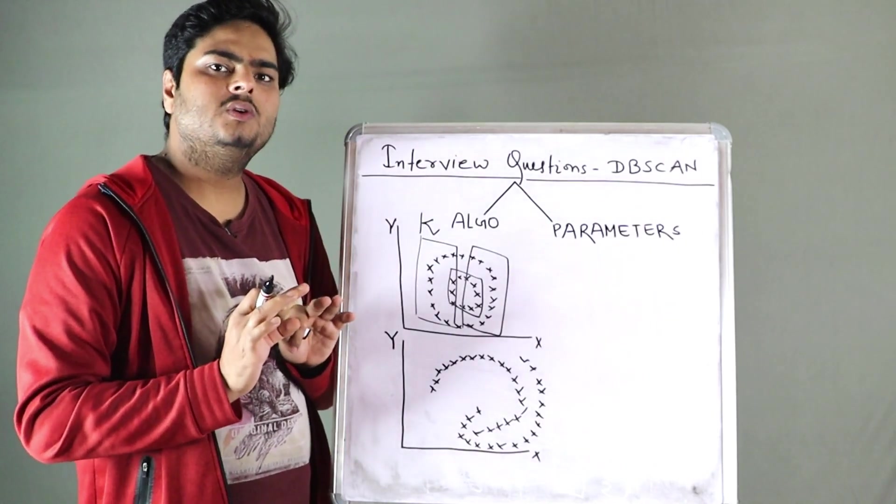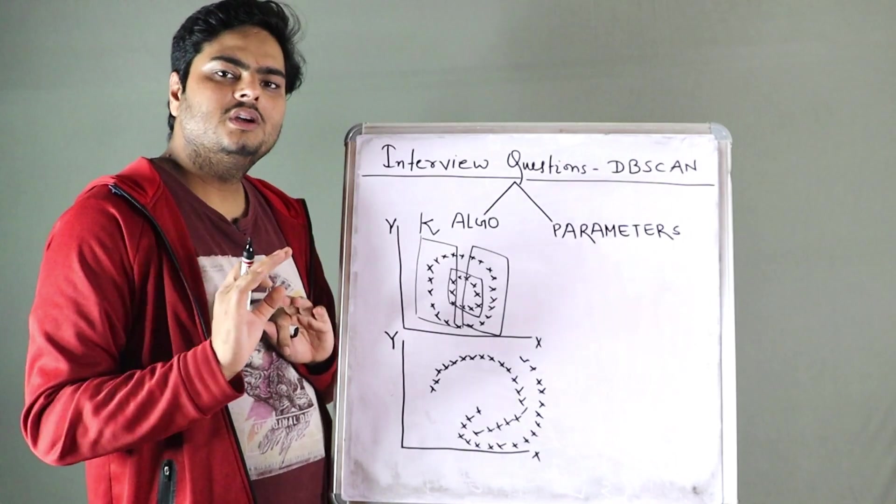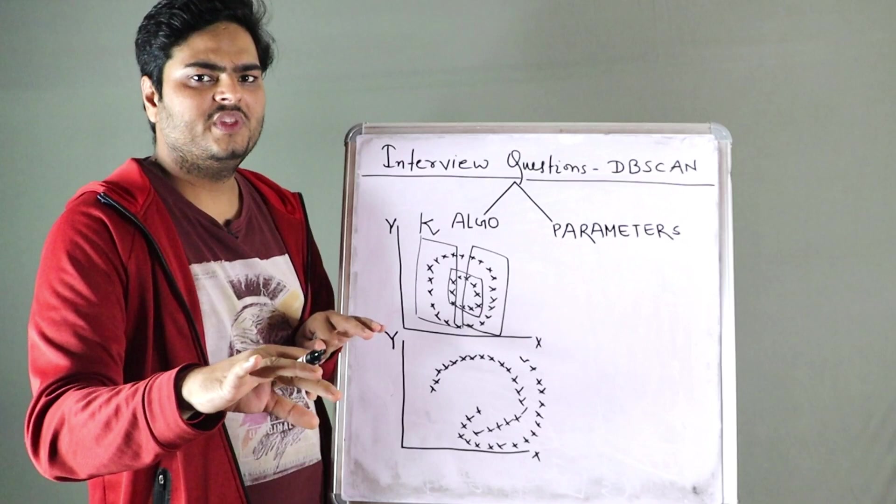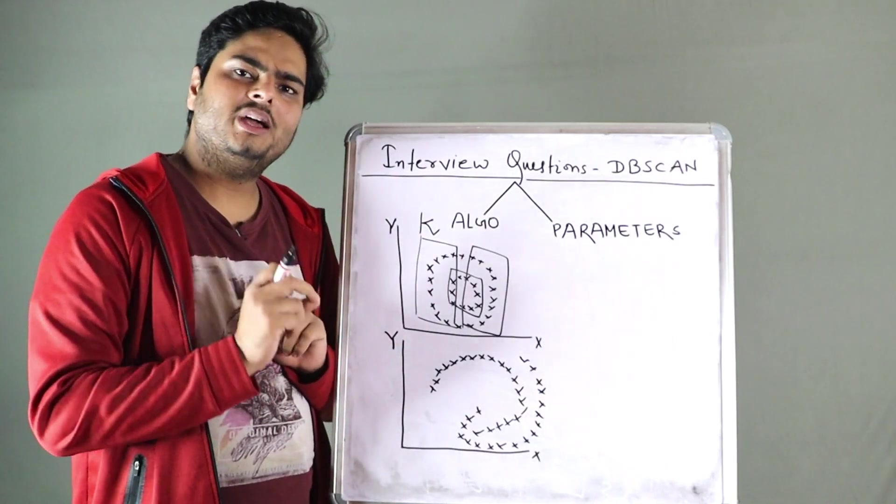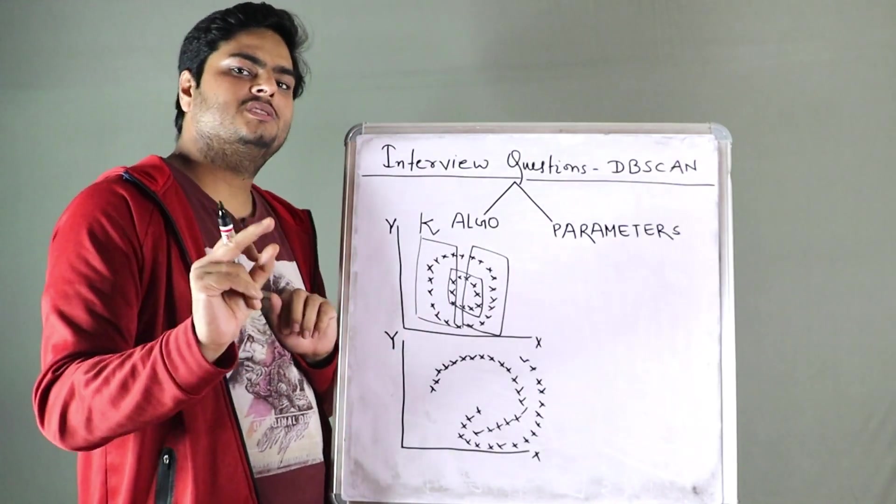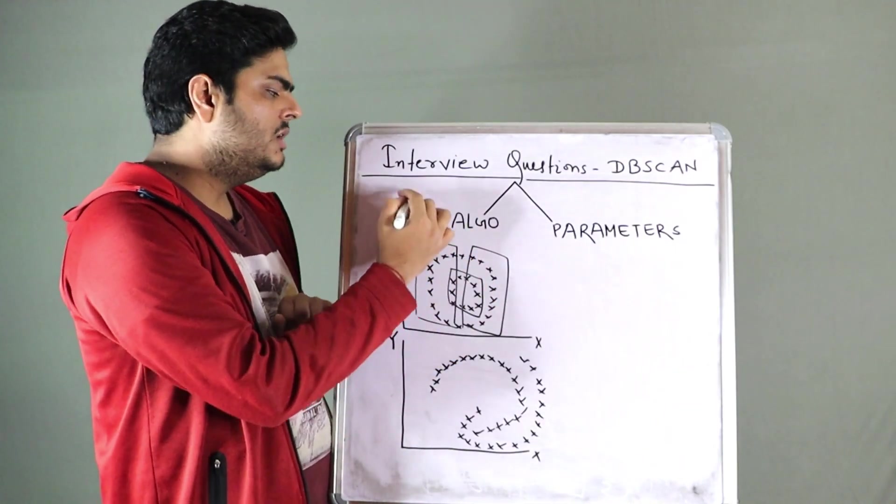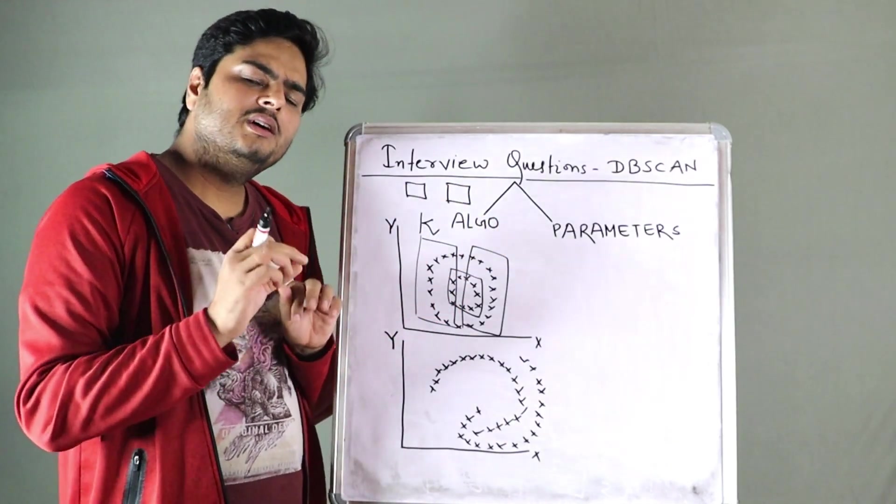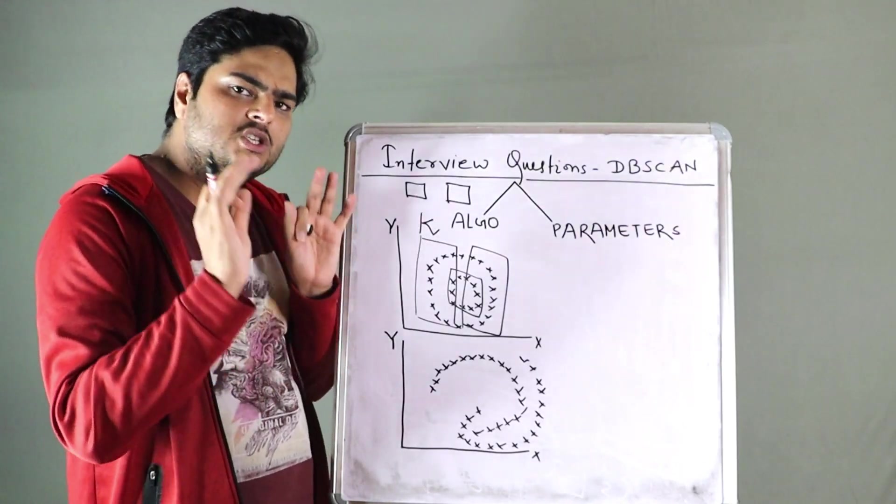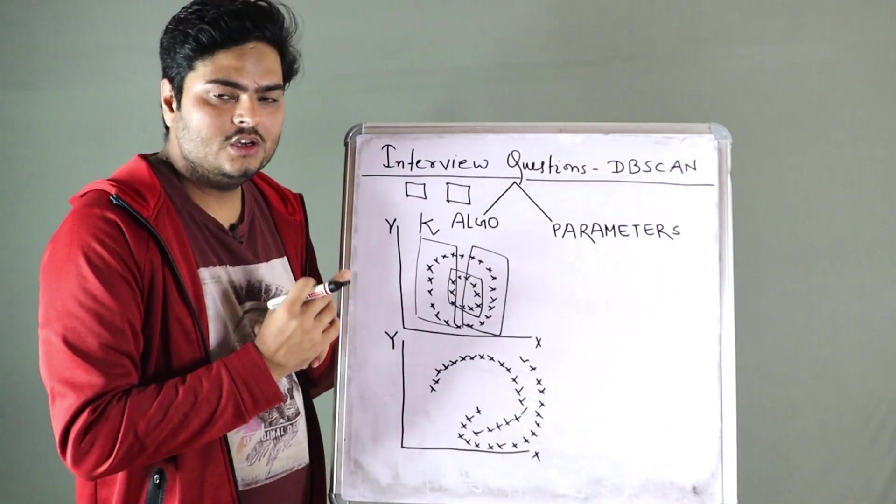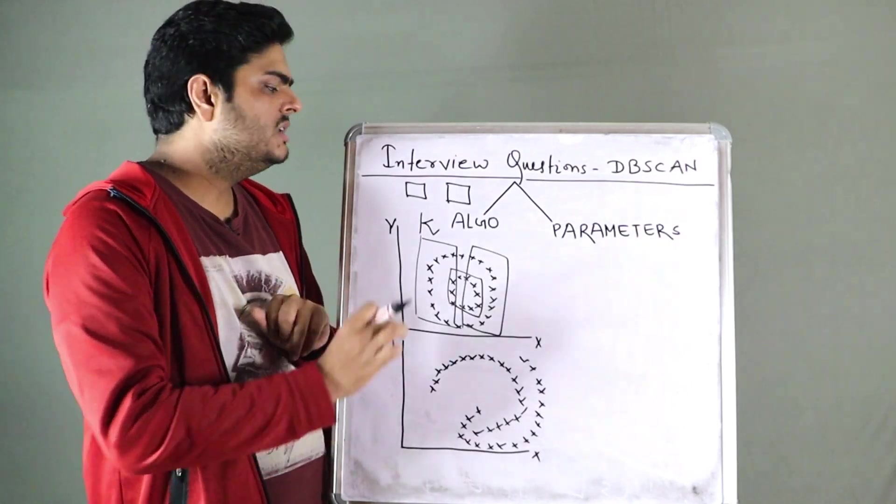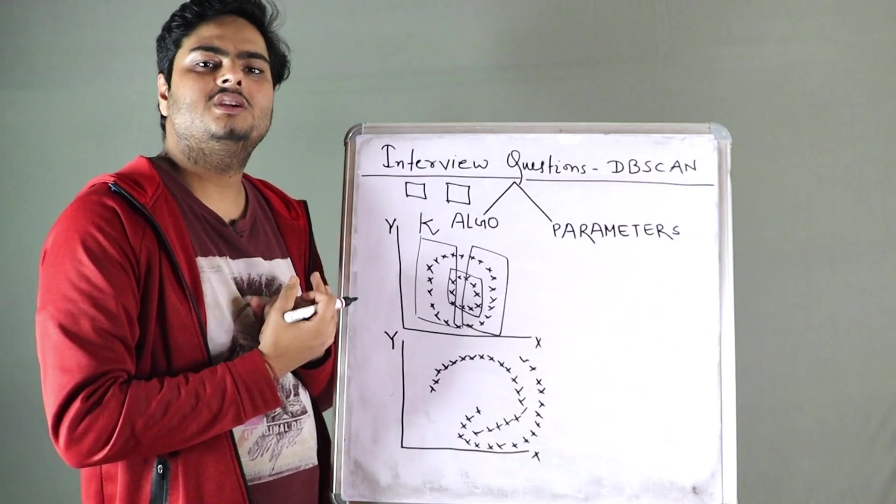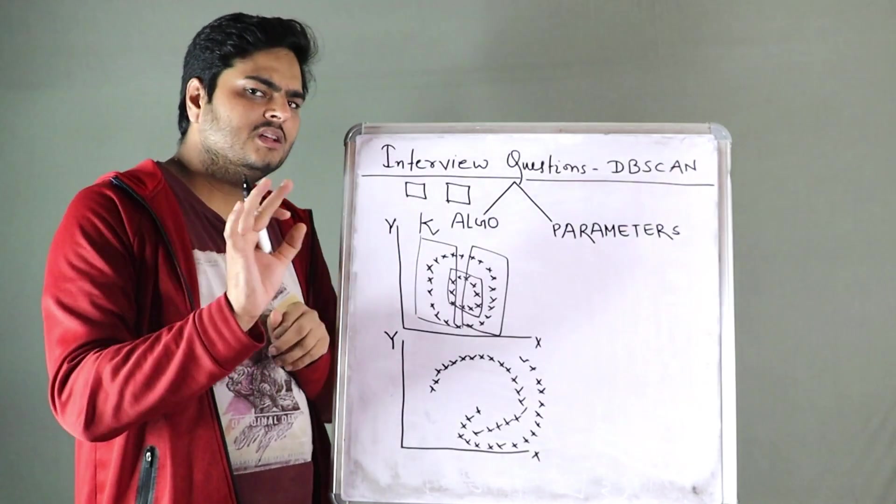suppose, suppose you are using a multi-core processor. Suppose you are training your model on multiple physical computers, let's say. In these type of algorithms, one drawback is you cannot process part of the algorithm, part of the data on one node and some part of the data on other node. The reason for that is algorithm has to look at all your data points together to decide the density. So from processing point of view, this is one disadvantage. You cannot make use of multi-core processing or multi-threading kind of scenarios.